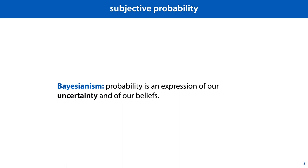The alternative to objectivism is subjectivism. It states that probability expresses our uncertainty. If x is a boolean variable, one that is true or not true, and we are uncertain whether x is true, then we can assign a probability to x being true. A probability of 0.5 means we are entirely ambivalent, and a probability of 0.75 means we think x is pretty likely to be true. A probability of 1 means we are entirely sure, with no room for doubt. Under this interpretation, different people can have different probabilities for the same thing being true. You and I may disagree, and both be right. If you have information I don't have, your probability may be closer to certainty than mine.